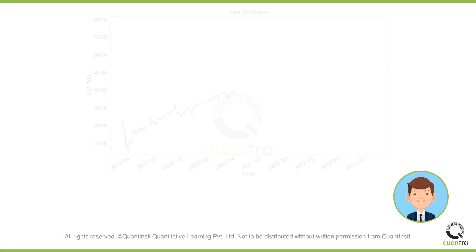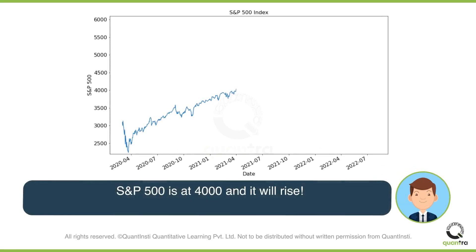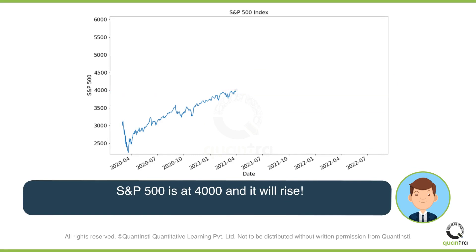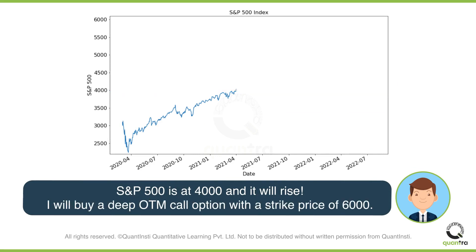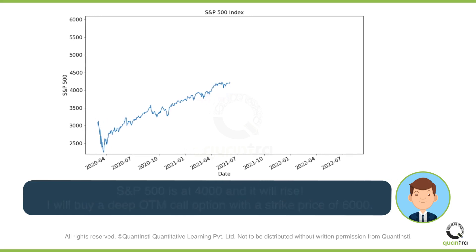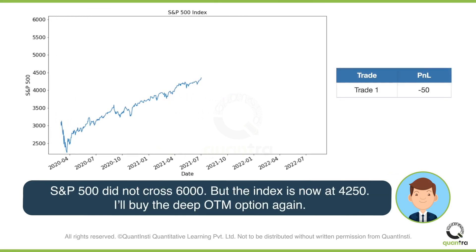John believes that the S&P 500 index, which is currently at 4,000, will rise over the next few days. Hence, he decides to buy a deep-out-of-the-money call option that has a strike price of 6,000. John believes that the index will rise to this level and he will earn a huge profit. But this does not happen and the option expires worthless.